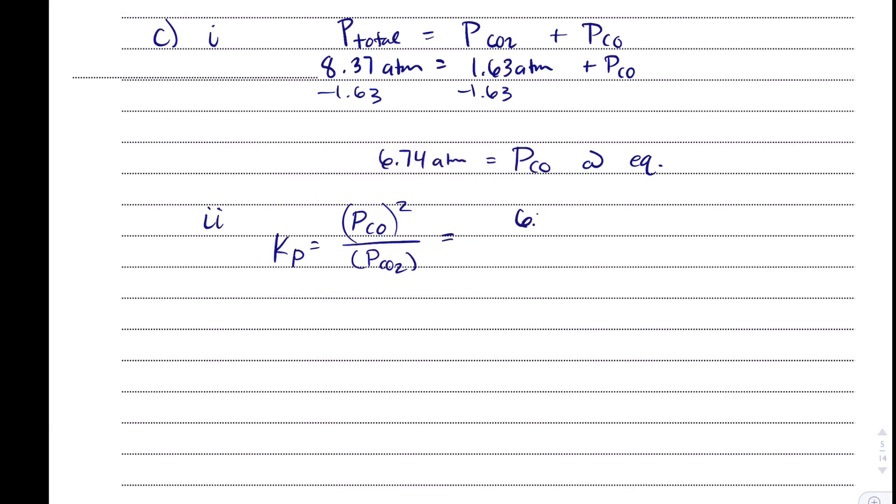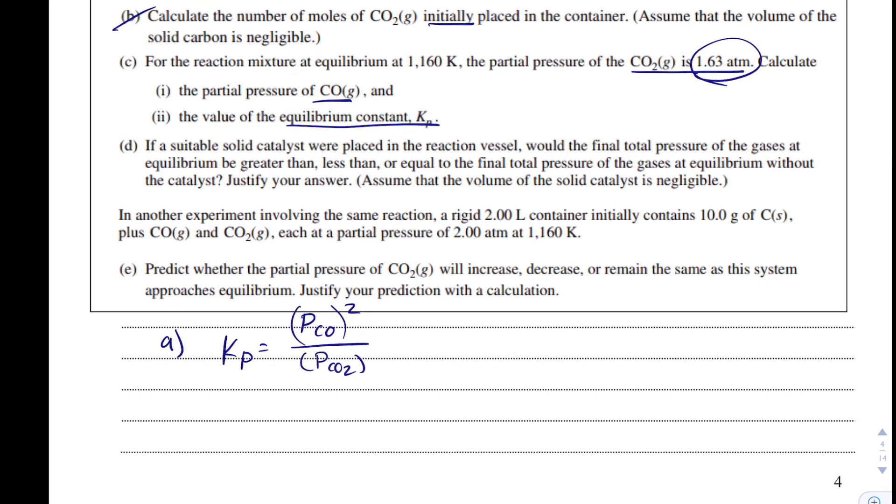So carbon monoxide was 6.74 ATMs. Make sure you square that. And then carbon dioxide here was 1.63 ATMs. So I'm just going to plug that into my calculator. I expect to get a K greater than 1 because our products are much larger than our reactants, and I do, I get 27.9 for my Kp. And as a gentle reminder, equilibrium constants do not have units.